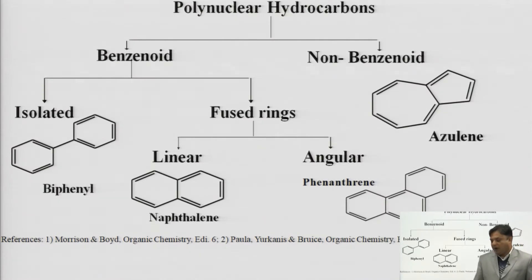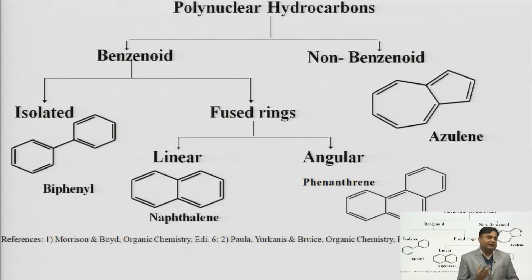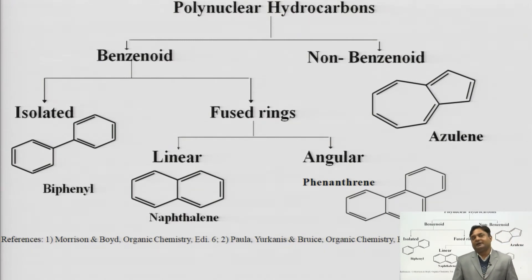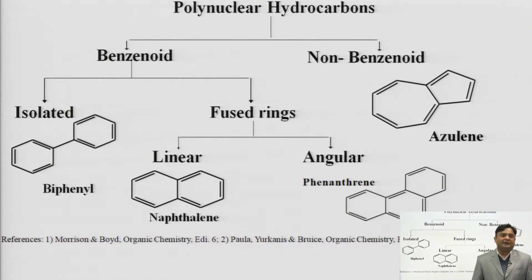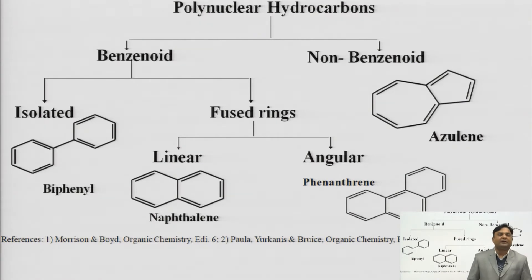Now, how can we classify the polynuclear hydrocarbons? As you can see in the slide, they are generally divided into two main categories: benzenoids and non-benzenoid compounds. As the name suggests, in the benzenoid category, those compounds are included which have at least one benzene ring in their structure.